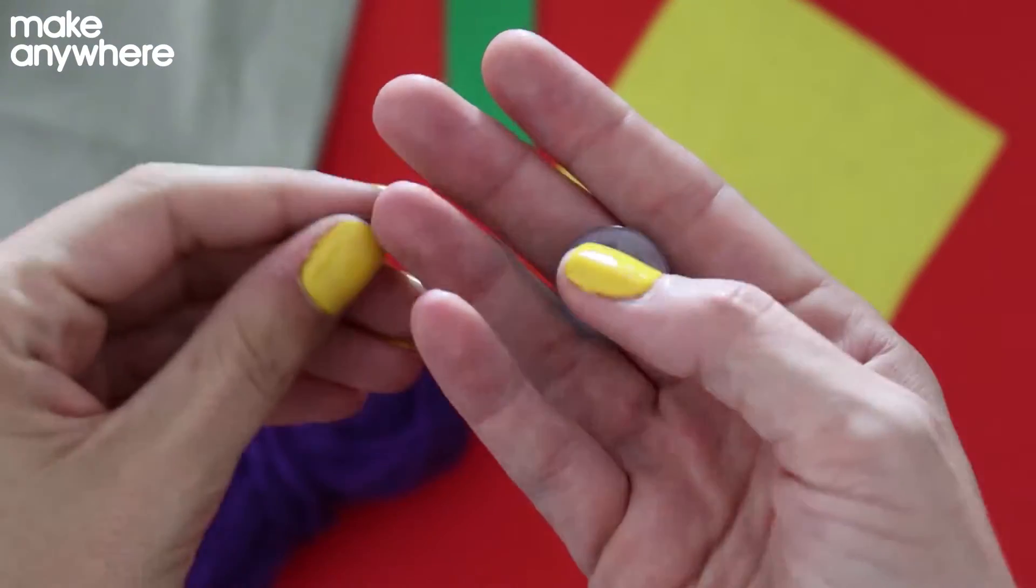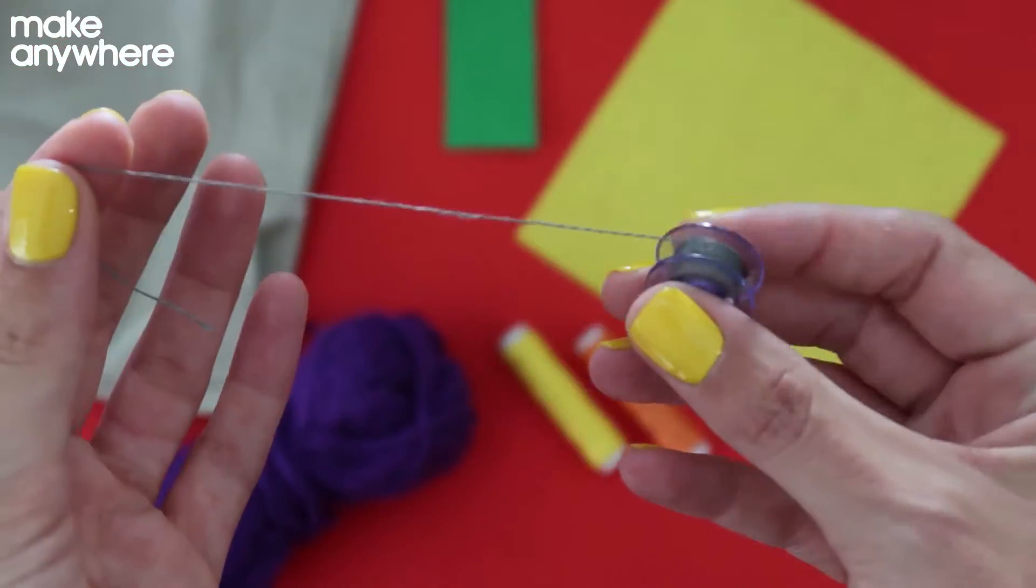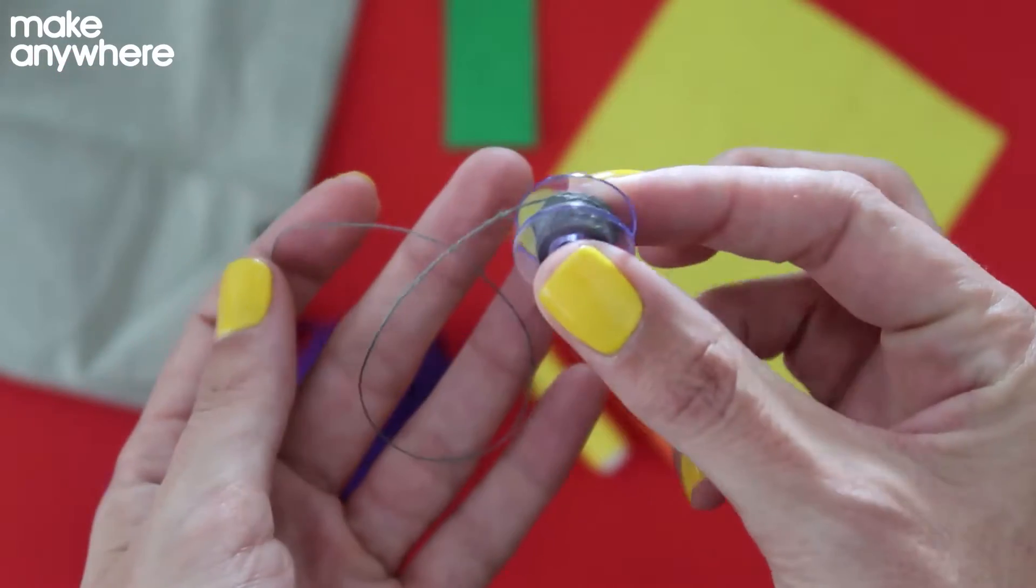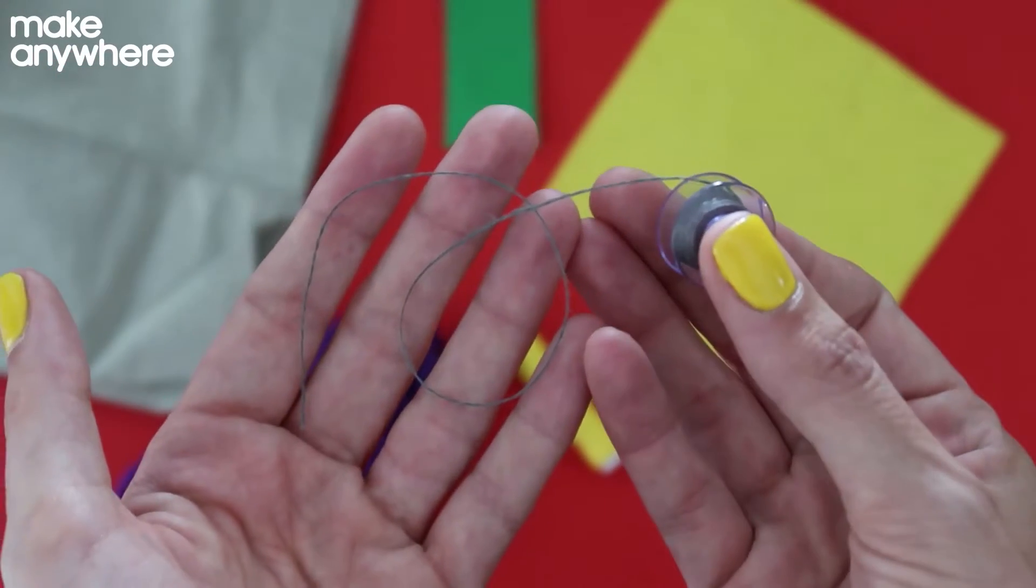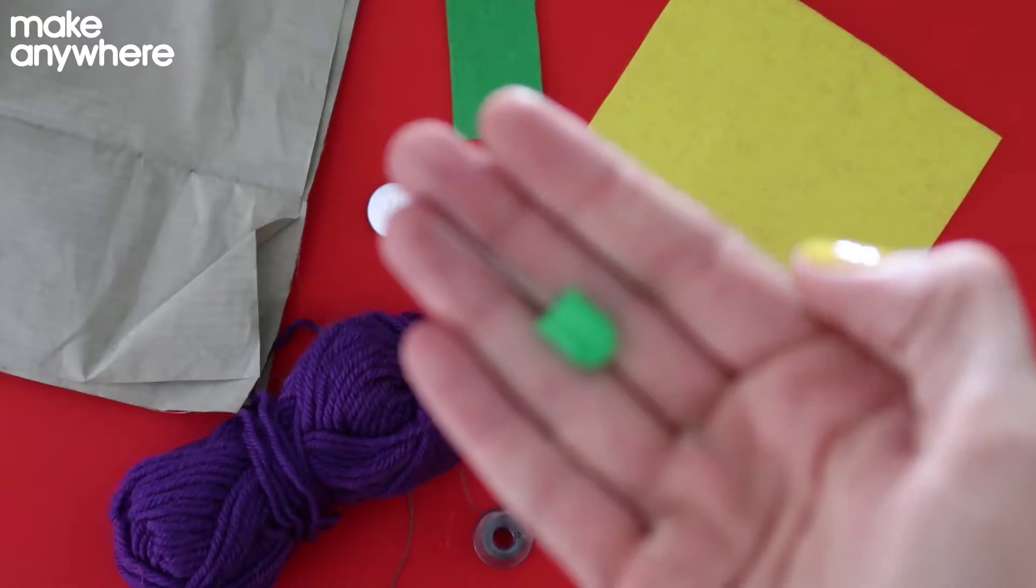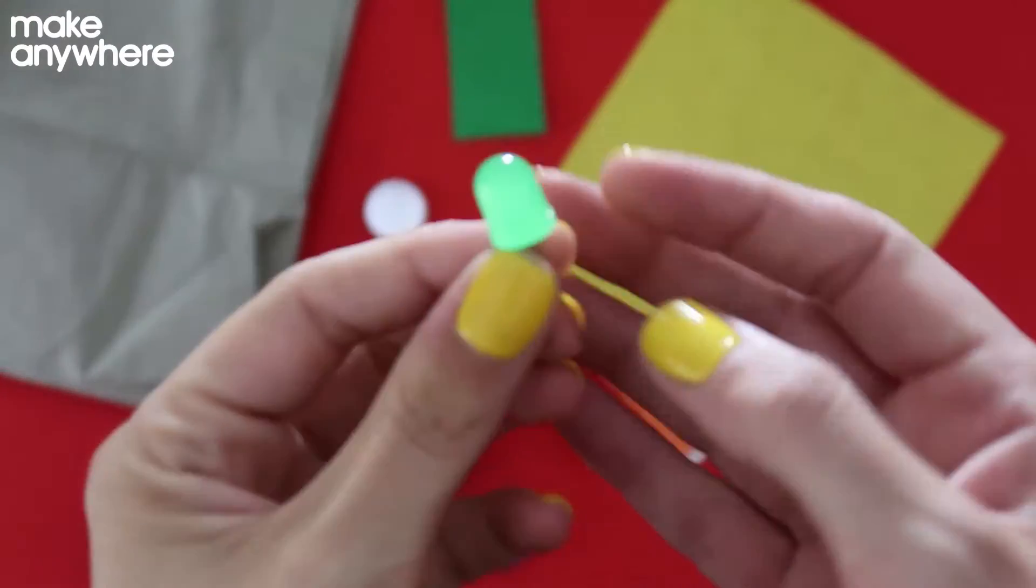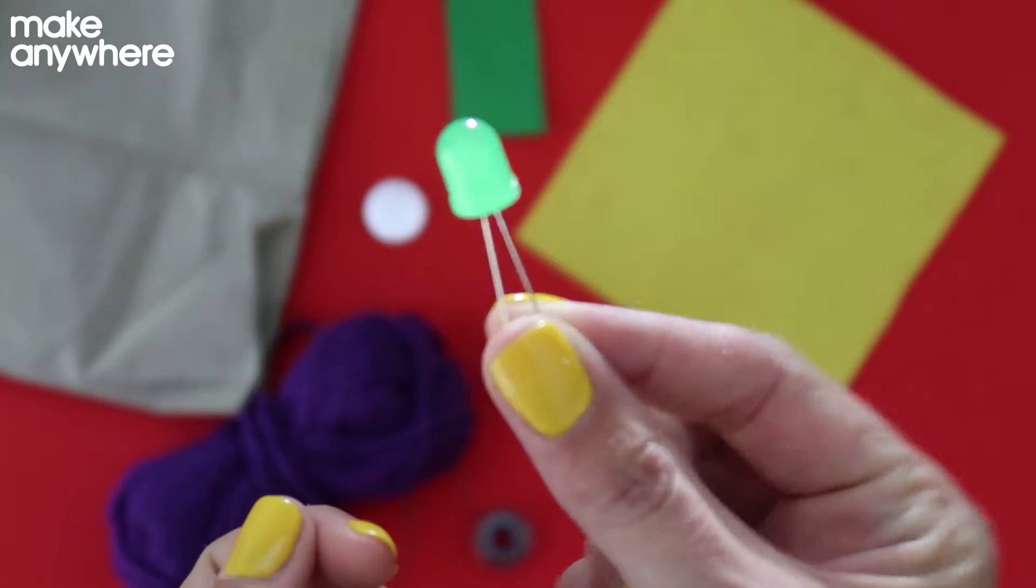Some thread, some conductive thread. This is different to normal thread as it allows power to run from your battery to your LEDs and resistors. A cell battery, an LED or light emitting diode. We're going to use one of these 10mm green ones.